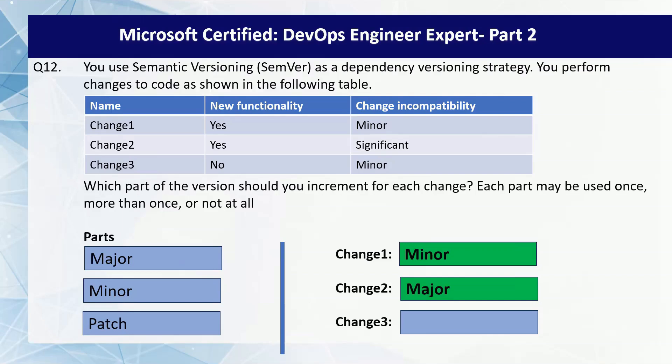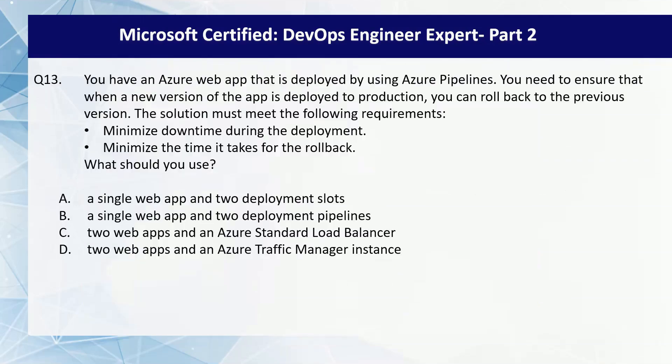Whenever you make backward compatible bug fixes, you need to increment the patch version. A patch or revision is used to indicate that a flaw, bug, or malfunctioning part of the component has been fixed. Usually it is a backward compatible version compared to the previous versions.